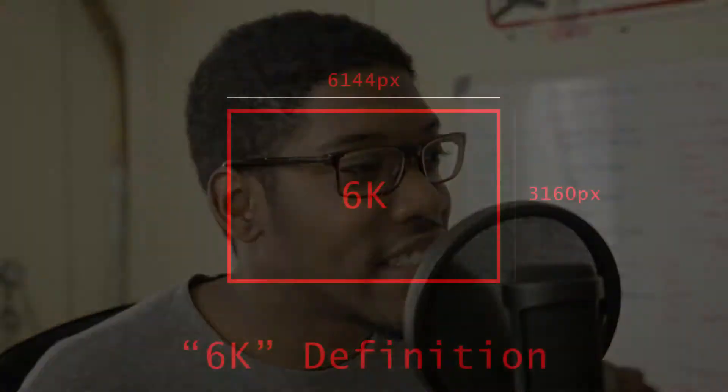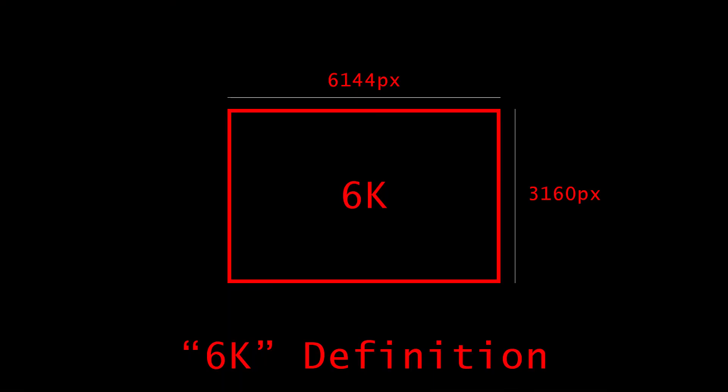The next step up is 6K, and that is 6144 horizontal by 3160 vertical. If the highest you can record comfortably is 6K, go for it.